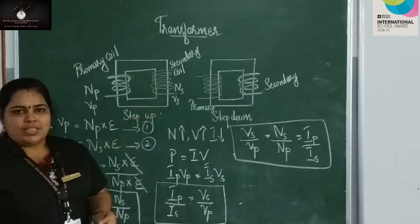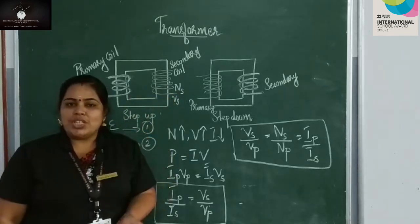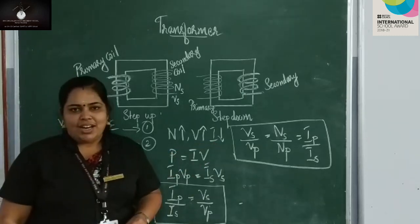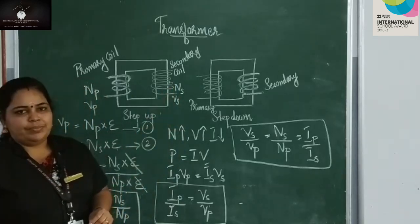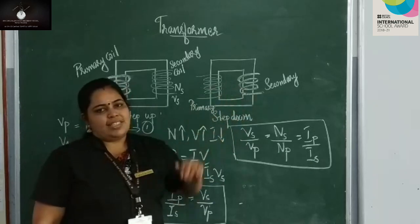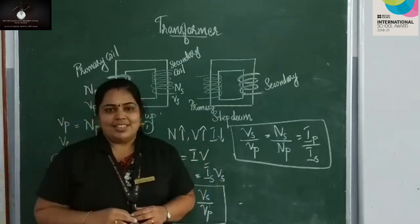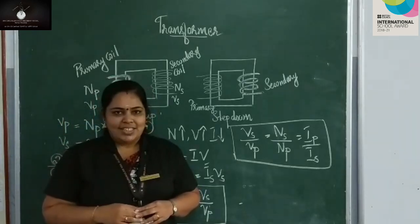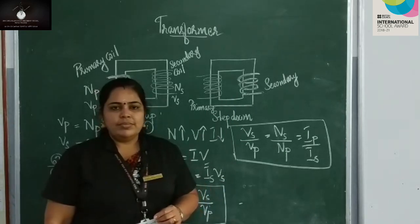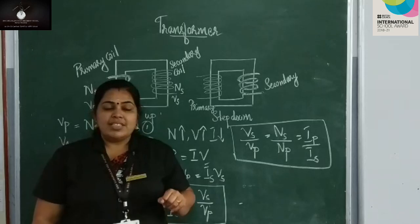In the secondary of a step up transformer, thin wires are used. The number of turns is more, so voltage increases. When voltage increases, current decreases, so heat produced also decreases — therefore thin wires suffice. In the step down transformer, the number of turns in the secondary is less, voltage is less, current increases, and heat increases. So thick wires are used in the secondary of a step down transformer to avoid melting.